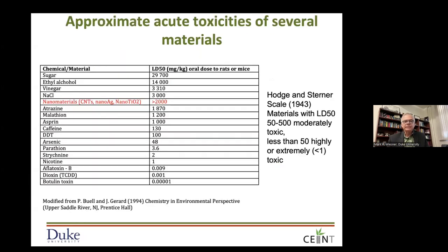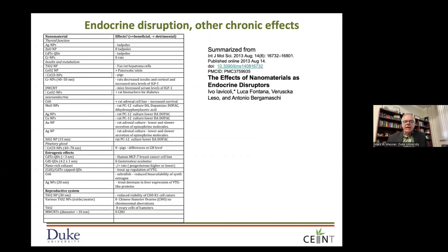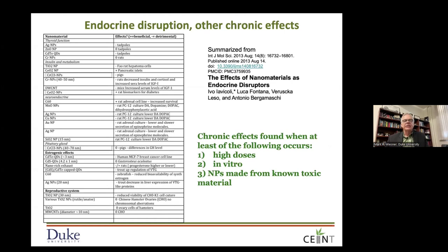If you rank some of the highest-production nanomaterials — carbon nanotubes, nanosilver, nano-titanium dioxide — in terms of their LD50, their acute toxicity, you can see where they sit in a table ranging from the botulism toxin at very low concentrations up to sugar. Similarly, looking at chronic effects of nanomaterials, chronic effects are generally observed when you have very high doses — doses greater than one would normally anticipate under conventional chronic exposure scenarios.